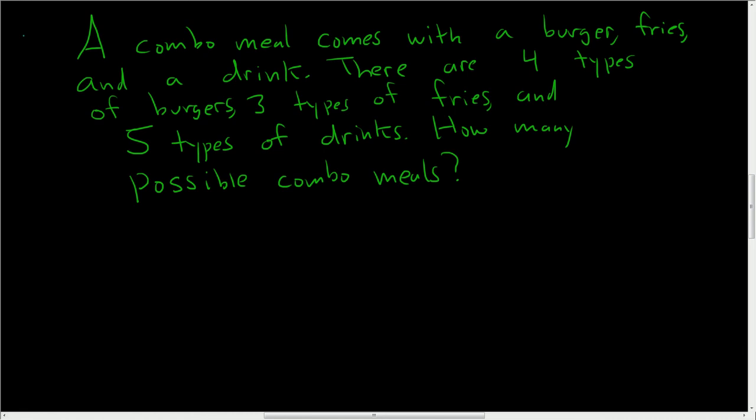Okay, so we're told a combo meal comes with a burger, fries, and a drink. We're also told that there are four types of burgers, three types of fries, and five types of drinks. And the question is, how many possible combo meals?